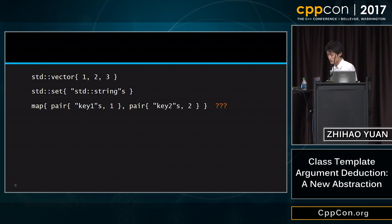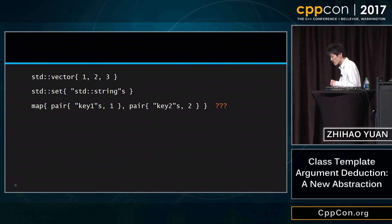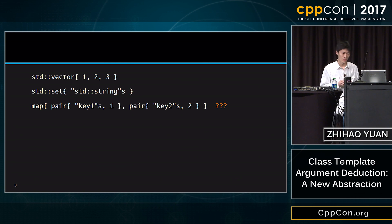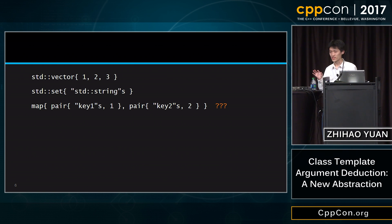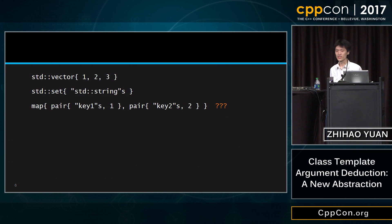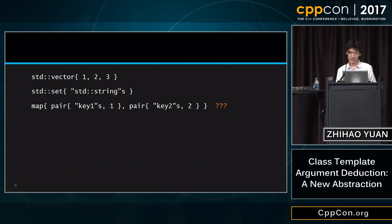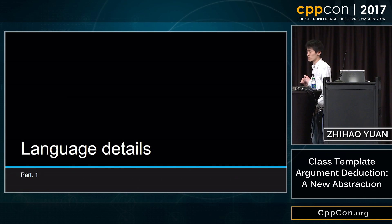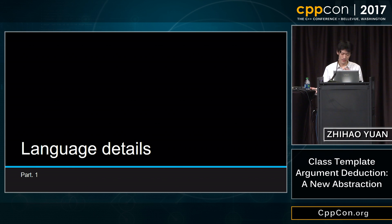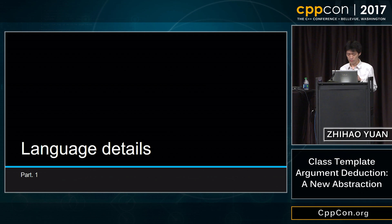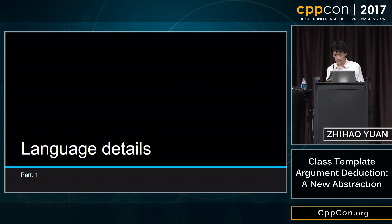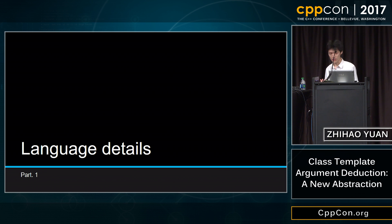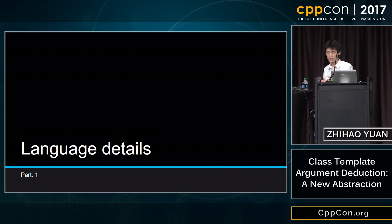This is why the title of the talk is 'Class Template Argument Deduction as a New Abstraction.' Let's forget about these tiny pieces — some of them make sense after you understand the feature, some will be fixed in the future. But we need to view this feature from another angle. Let's start from the very basic language details, and I'll try to explain this feature as thoroughly as I can so that you can make full use of it.